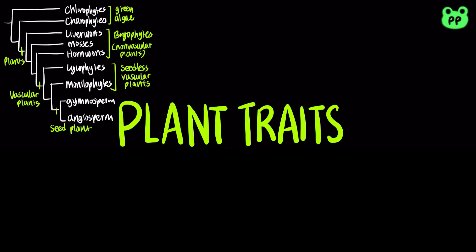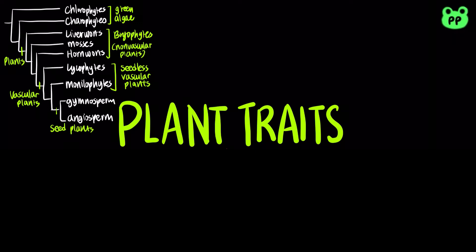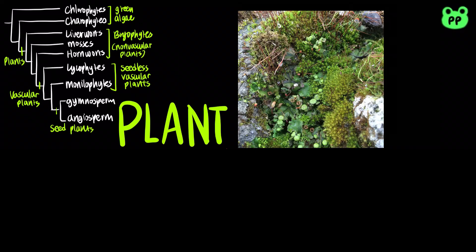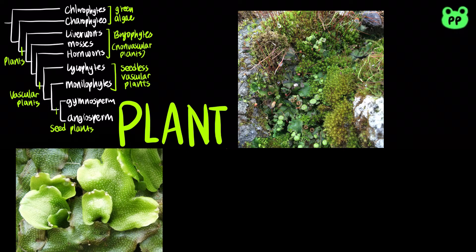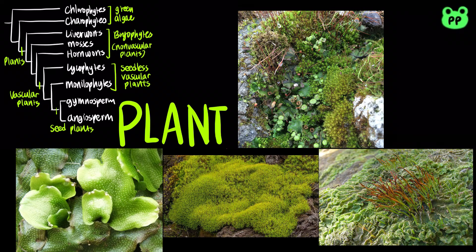I will begin this video by going through plants' phylogenetic tree. Chlorophytes and charophytes are protists known as green algae that are closely related to land plants. The earliest land plants are known as bryophytes. They are non-vascular and they include liverworts, mosses, and hornworts.